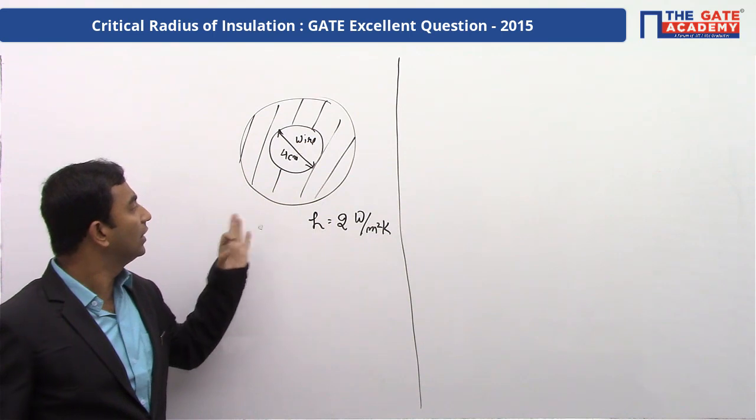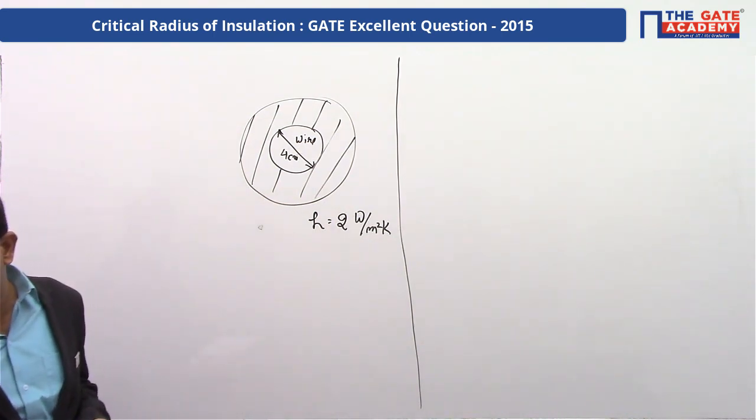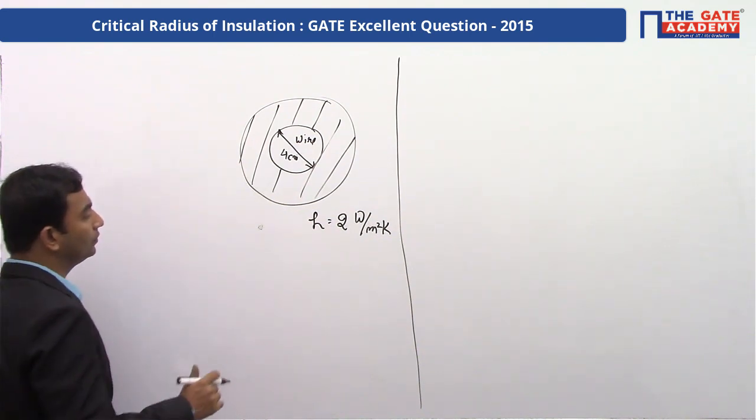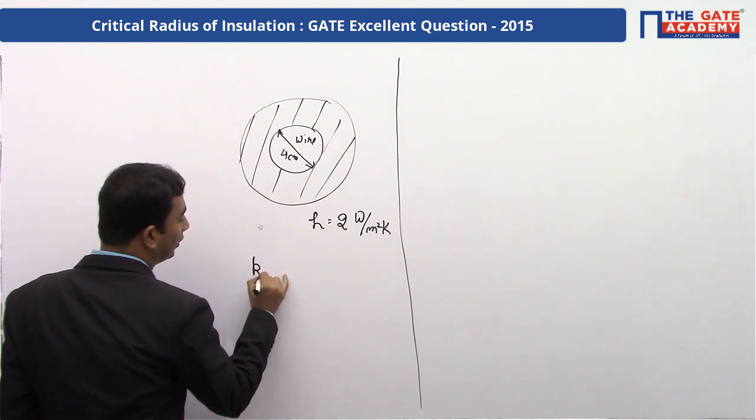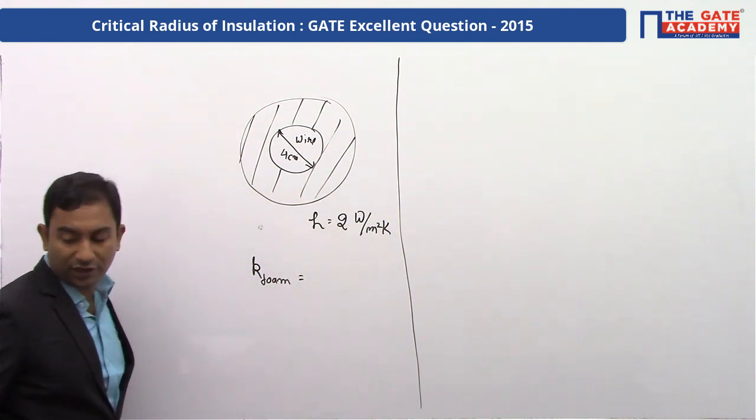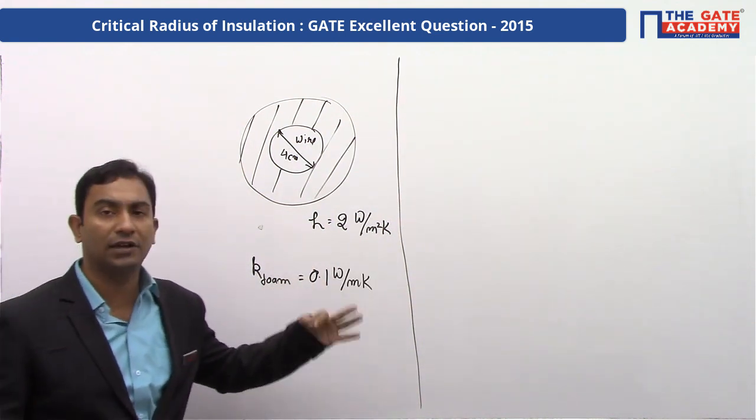Next, we are given the thermal conductivity of the insulating material. The thermal conductivity of the insulating material is given as k equal to, I will write it over here, k foam. So, k foam is given as 0.1 watt per meter per kelvin.